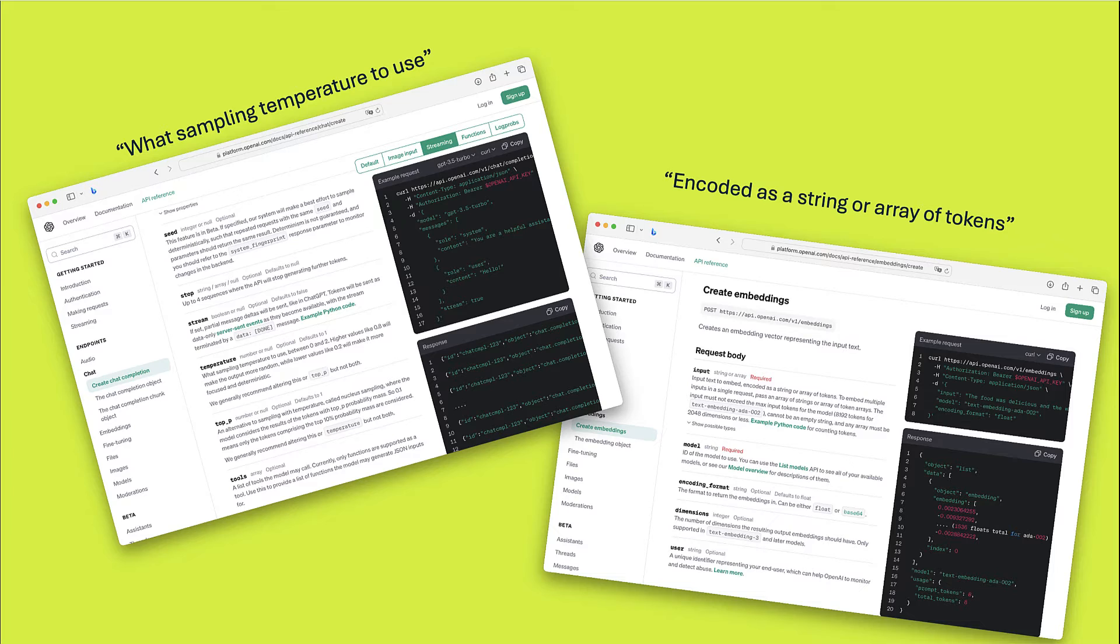But over time, programming languages have evolved and abstractions have been put on top of memory management, for example, or data structures. I think generative AI will be similar, but at the moment, you still need to know quite a bit about the guts of how it works.